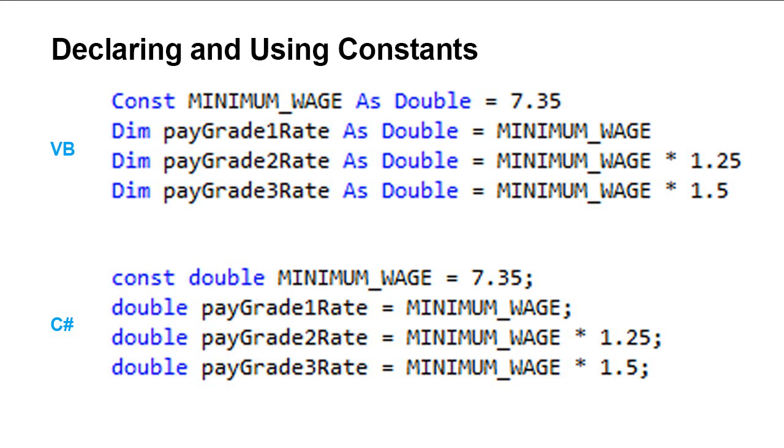Constants have the same naming requirement as variables. You must start with a letter, and they may contain letters and underscores. But most programmers capitalize the entire constant name. So you see minimum wage there is all uppercase. And since we're not using camel casing, we would separate each word with an underscore. Of course we can't use spaces. So that's just a programming standard for all languages.